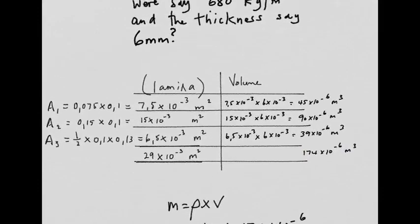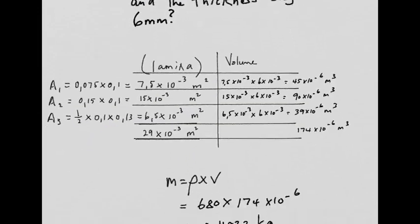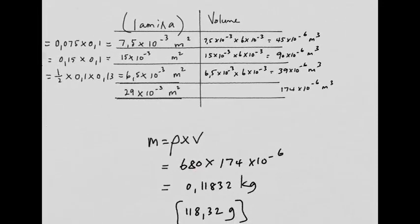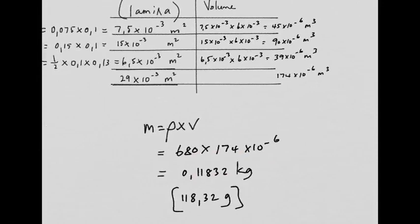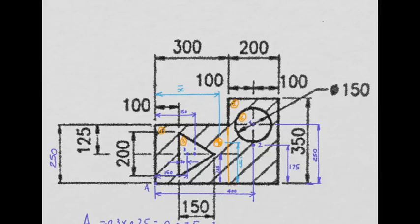Now remember, mass is density times volume. So there's our density, there's our volume from above. Plug it in: 0.11832 kilograms or 118 and a bit grams. And just to confirm, there's the plywood on a scale, 120 grams.